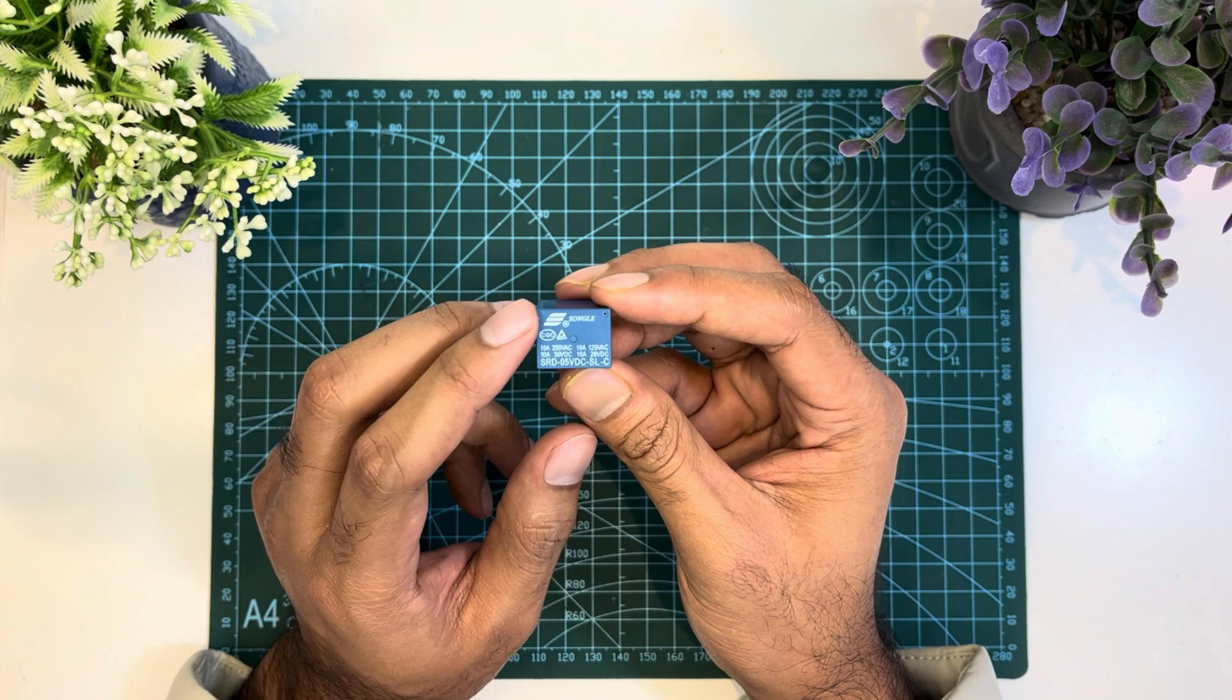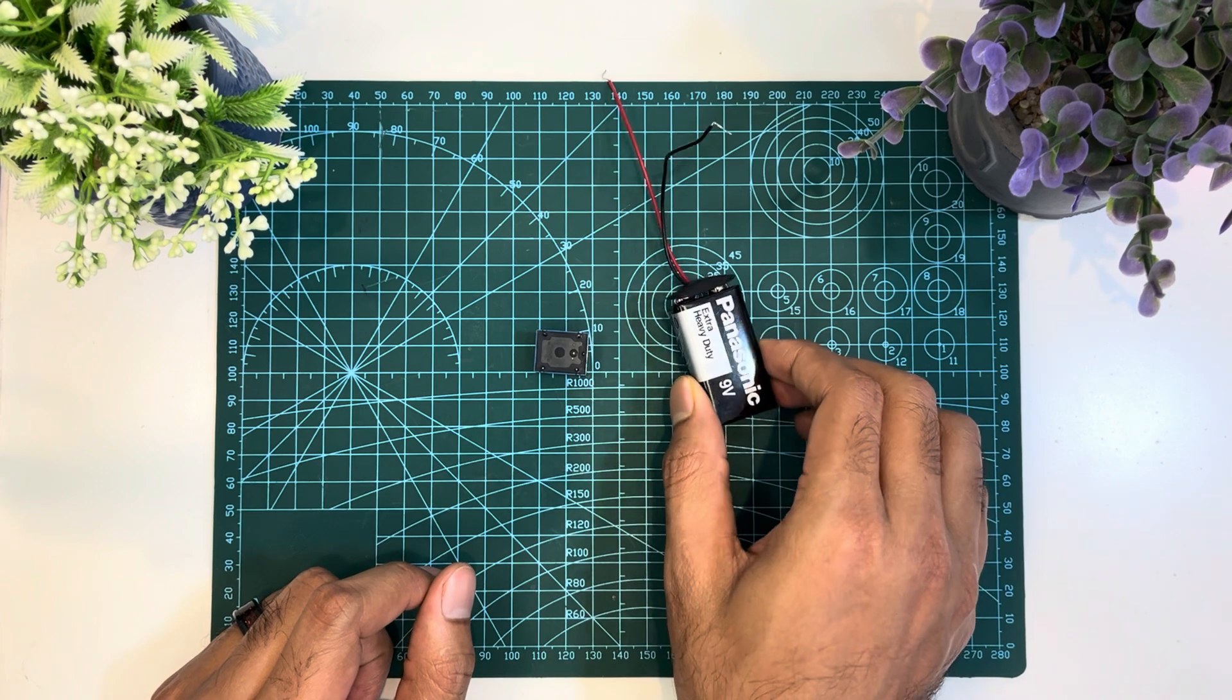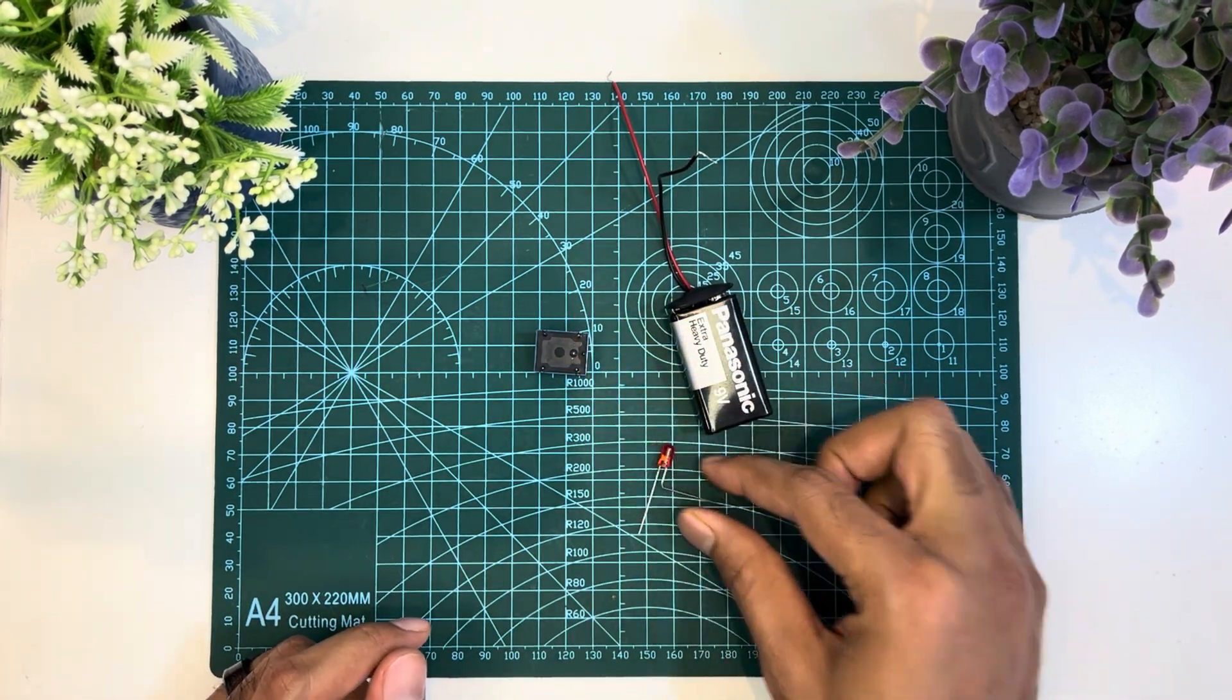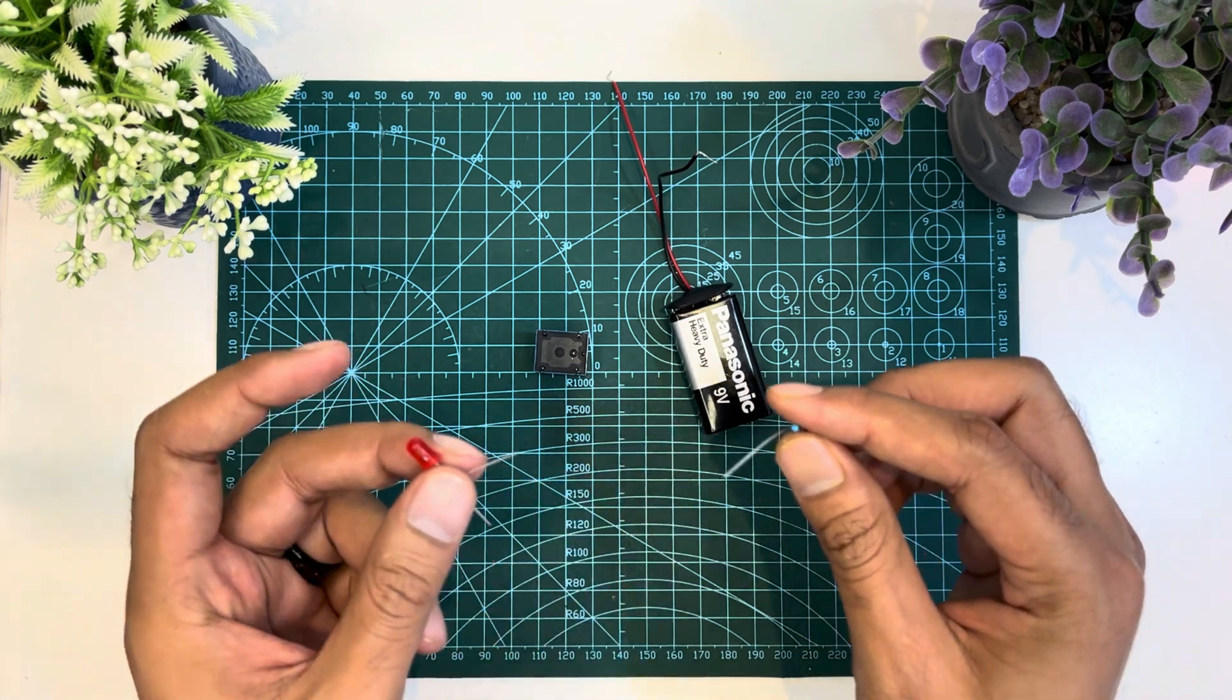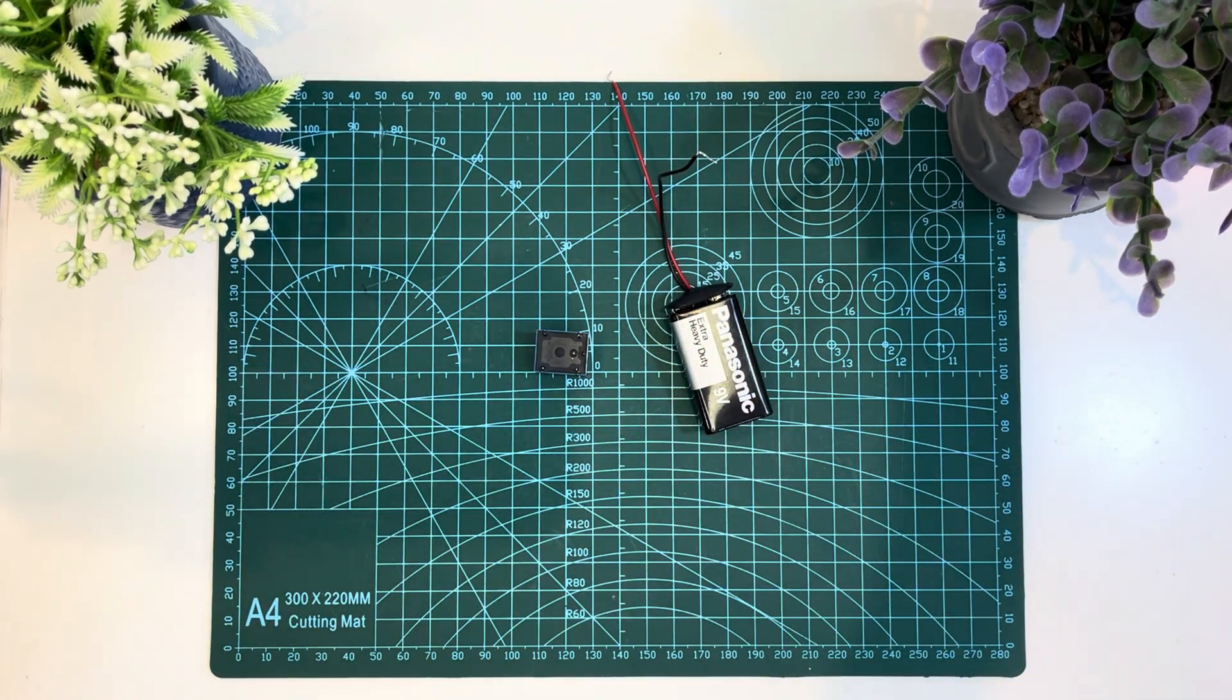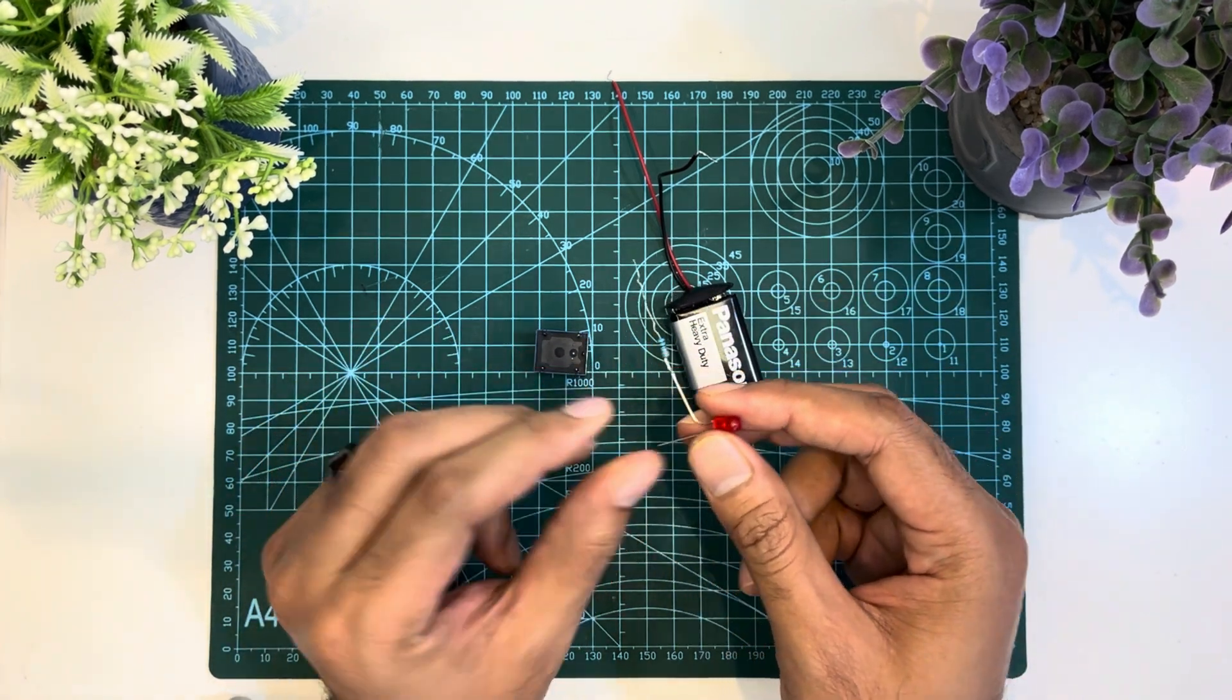Now just for testing, instead of using a heavy load, I will use a 9V battery and a small LED. I have to use a 330 ohm resistor as I am using 9V as a voltage source. At the end of this video, I will show controlling a heavy load by relay.